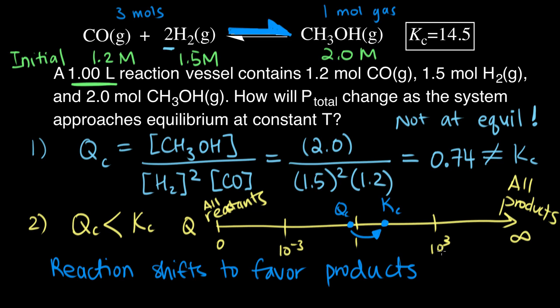So that means, as we shift to favor the products, we're going to reduce the number of gas molecules in the system, and that's going to reduce our p total. So the answer is that p total is going to decrease as our reaction approaches equilibrium, and that is because our reaction quotient Q is less than K.